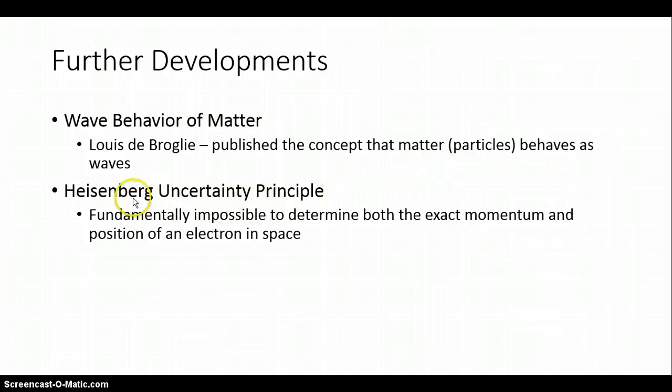Next one is Heisenberg uncertainty principle. You might recognize this name, Heisenberg, from a very famous TV show on AMC. But whatever the case, it's fundamentally impossible to determine both the exact momentum and position of an electron in space. This means that I can neither know where it is or how fast it's going at the same time. I can only know one or the other in varying probabilities. This is well beyond what we're going to cover in this scope. Just recognize the name.